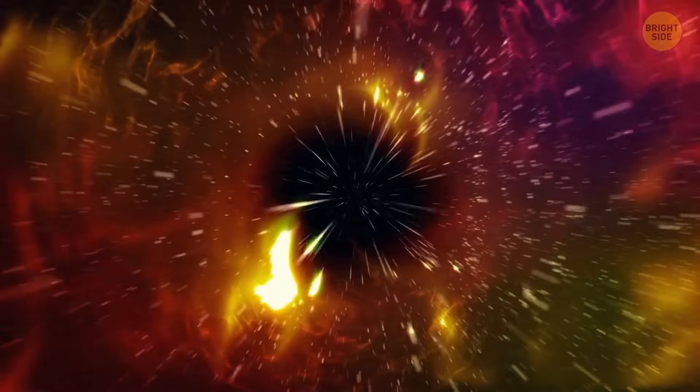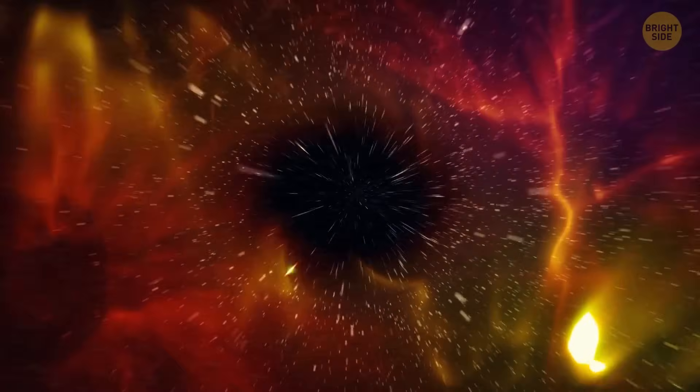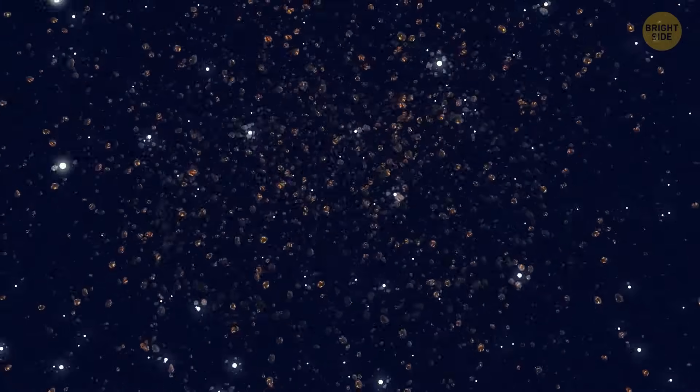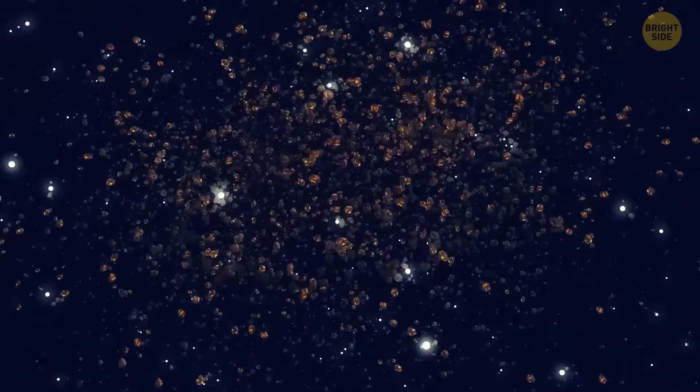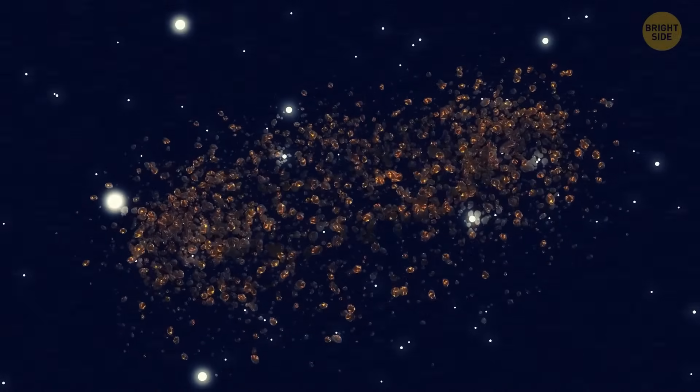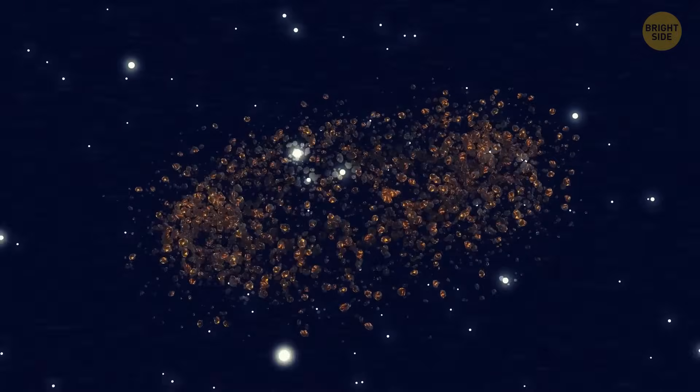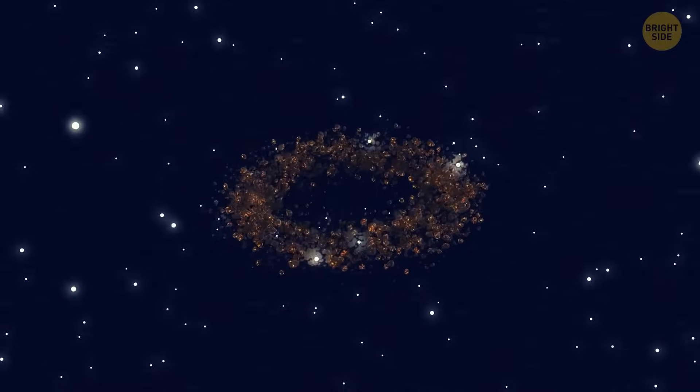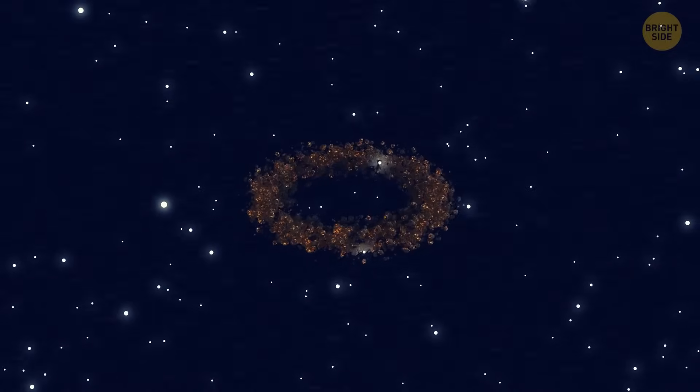Because of gravity, these particles start falling toward a central point. They become more tightly packed together, like when you squeeze a ball in your hand. And eventually, they're squeezed so hard that the cloud starts to flatten into a disk shape, kind of like when you mix flour and water to make pizza dough. This disk is called a protoplanetary disk.